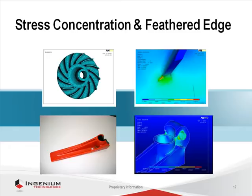The bottom example is one side of a jaws-of-life tool, which is used to spread openings in car wrecks to release the occupants. This failure occurred at a combination of a feathered edge and a stress concentration. The fix was a machine cut removing the combination — one of the few metal-removal solutions found.